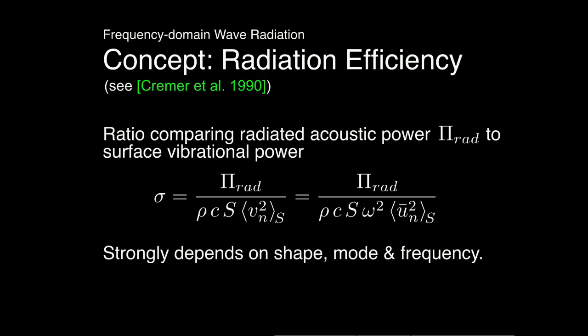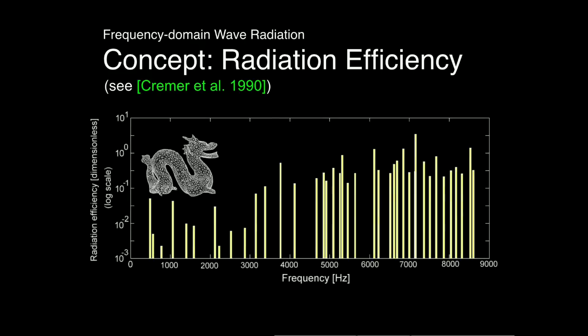Acoustic transfer is really important for capturing the widely varying ability of modes to produce sound. Ignoring it and using a constant amplitude factor misses the natural character of sound sources. The concept of radiation efficiency — how good a mode is at making sound — varies like a loudspeaker: a tiny speaker cone is inefficient at producing low frequencies (long wavelengths) but more efficient at high frequencies. For a thin-shell dragon model, radiation efficiency values across modes can vary by a factor of a hundred to a thousand, and this is perceptually significant.